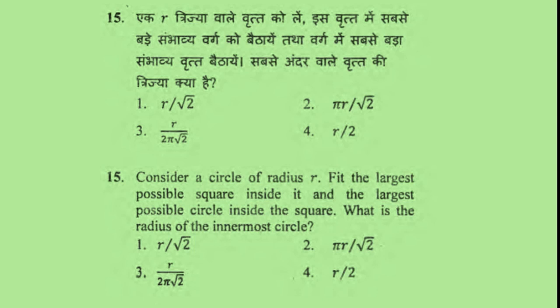Problem number 15: Consider a circle of radius r. Fit the largest possible square inside it, and then fit the largest possible circle inside that square. What is the radius of the innermost circle? Option 1: r/√2, Option 2: πr/√2, Option 3: r/(2π√2), Option 4: r/2.